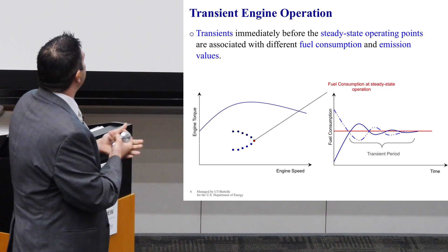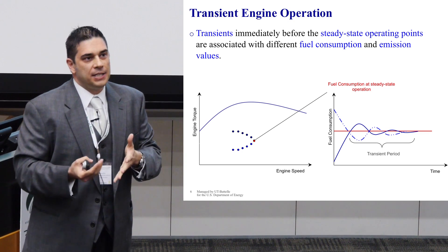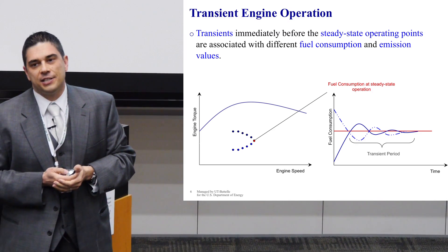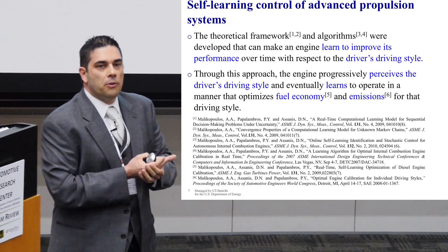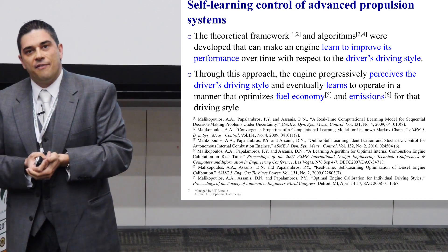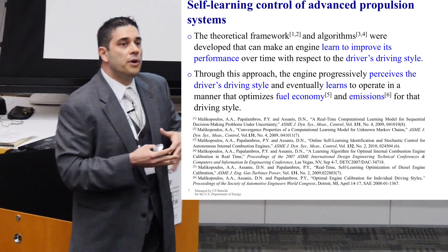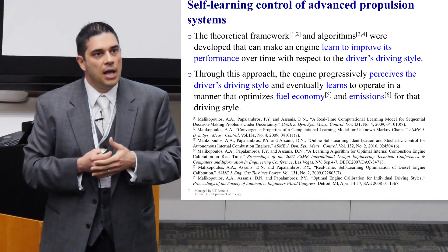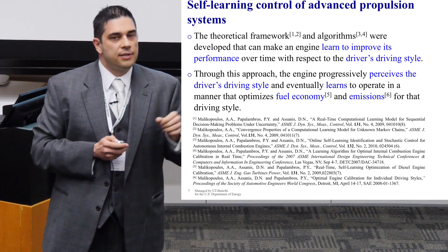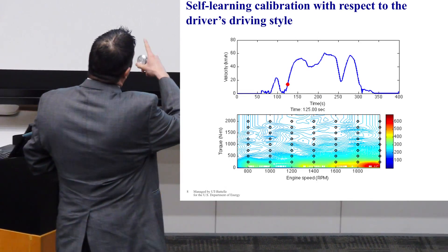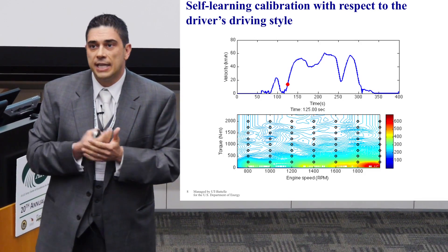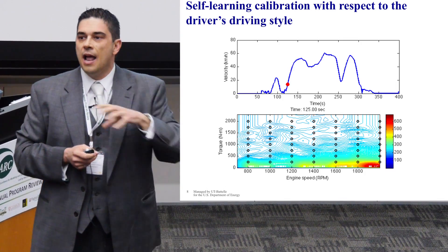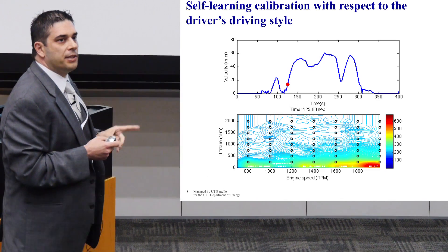So how to address this problem? To optimize for all these transient cases a priori is infeasible, because there are infinite different numbers of transients. So the idea was to develop the framework and algorithms that can make the engine learn the driver's driving style and derive an optimal calibration with respect to the driver's driving style. Essentially, we learn the sequences of engine operating point transitions and derive optimal calibration for these sequences. Instead of interpolating values corresponding to steady-state operating points, we learn the sequence of engine operating point transitions corresponding to the driver's driving style, and then we derive the optimal calibration for this particular transition.